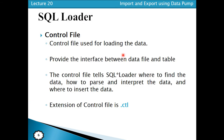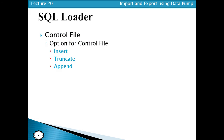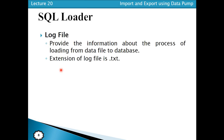Control files are used for loading the data and provide the interface between the data file and the database tables in SQL Loaders. The control file has the extension .ctl, and the different operations performed in it include INSERT, TRUNCATE, and APPEND. Log files provide information about the process of loading data from the data file to the database, and their extension is .txt.